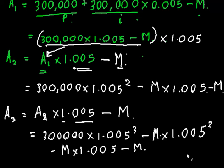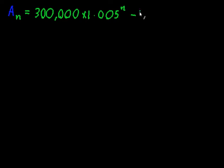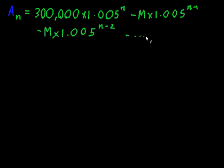So I'm going to skip ahead and go for any arbitrary repayment number. So A of N, N is an arbitrary number, could be A50, could be A70, whatever it is. The number that I'm going to be owing is 300,000 times 1.005 to the N minus M times 1.005 to the N minus 1 minus M times 1.005 to the N minus 2 and this dot dot dot minus M, so this is the amount that I'm owing.